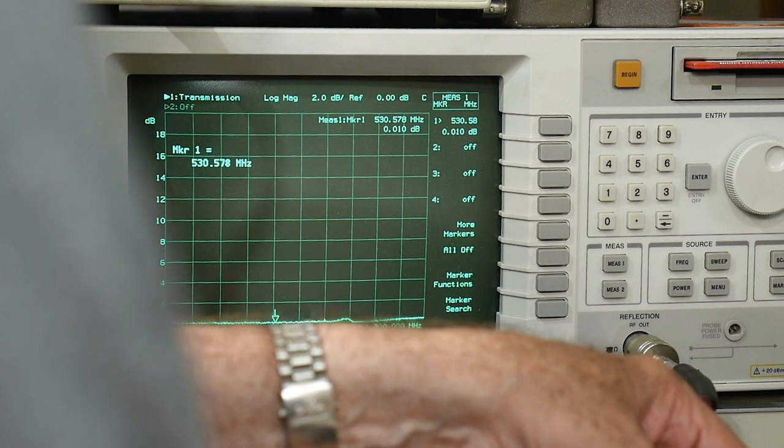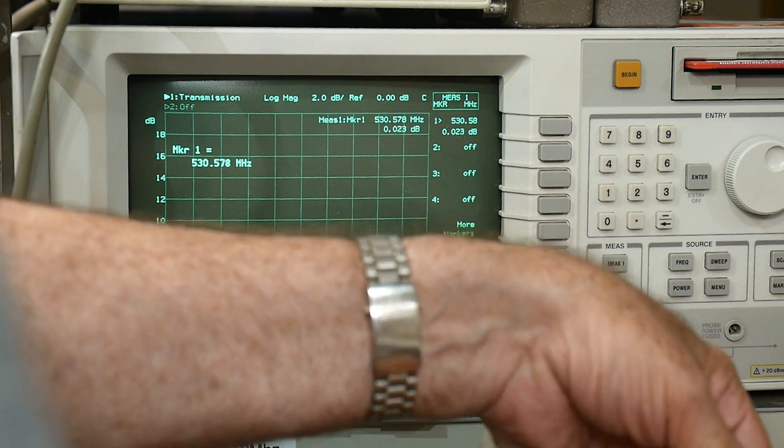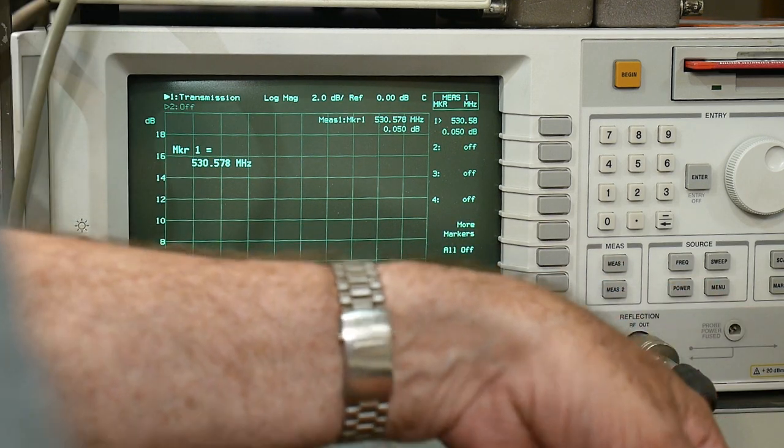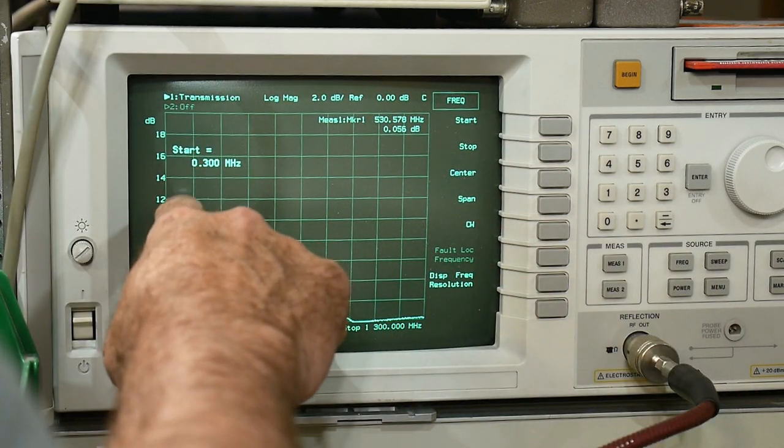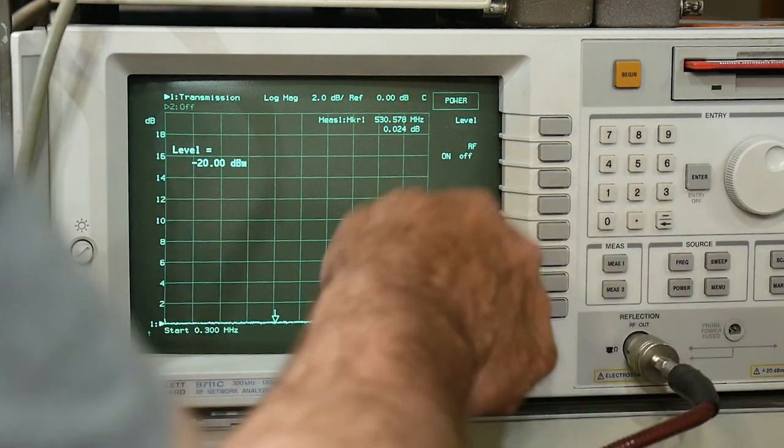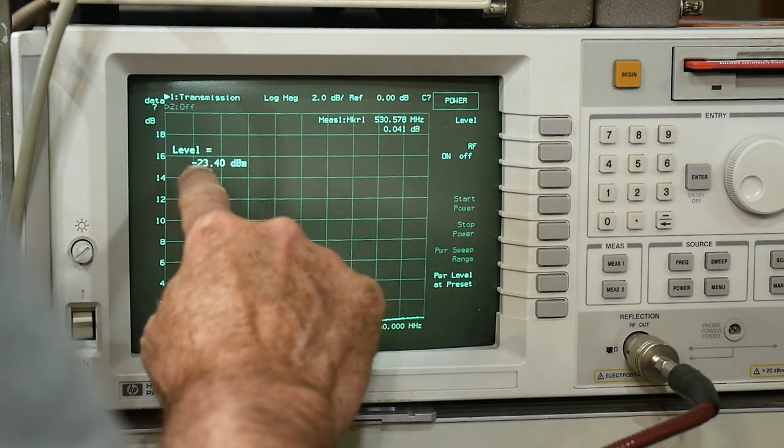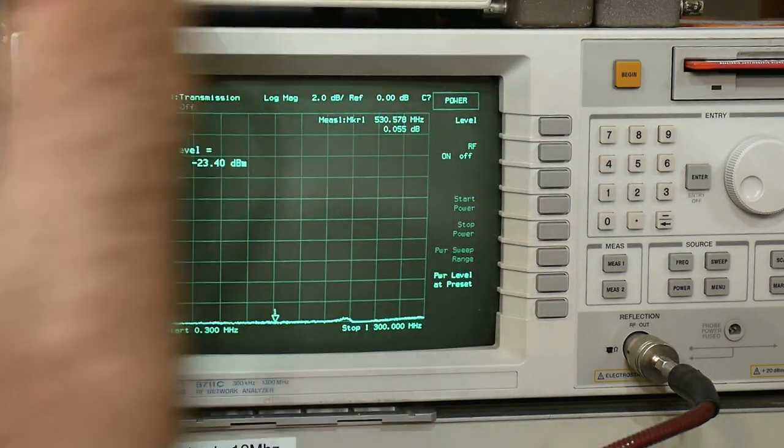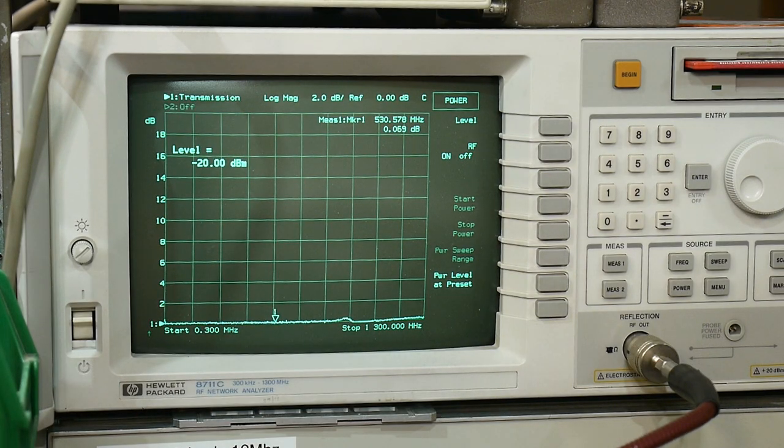Okay, so let me hook this up. All right, so we need to do a couple things here first. Attenuator is in line. I'm going to go to frequency, we're at 0.3 to 1.3 gigahertz. I'm going to hit the power button and it says the level. I can change the level that the machine outputs, there's a step attenuator inside the machine. So I'm going to set it to minus 20 dBm.